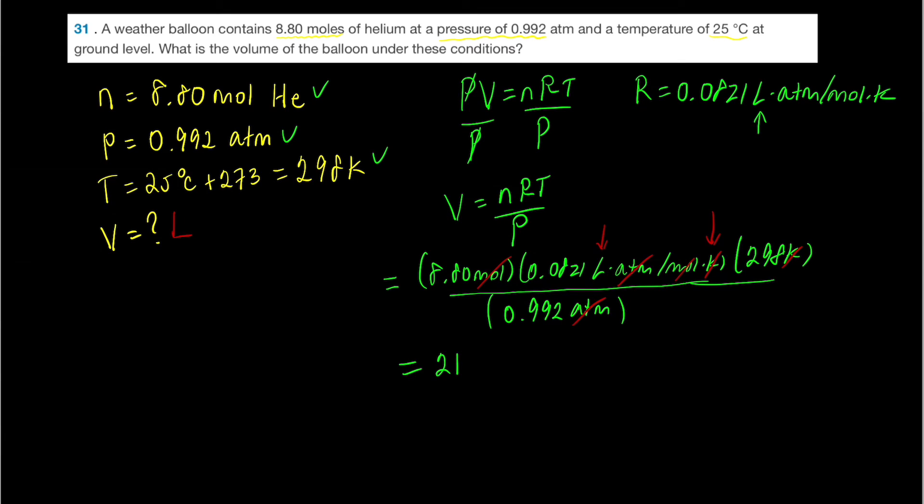And I'll leave that as 3 sig figs because there's 3 sig figs in all of these different numbers in the ideal gas law that we've punched in. So 217 liters is our final volume. Thanks for watching, and please do consider subscribing to support my channel. Have a great day.